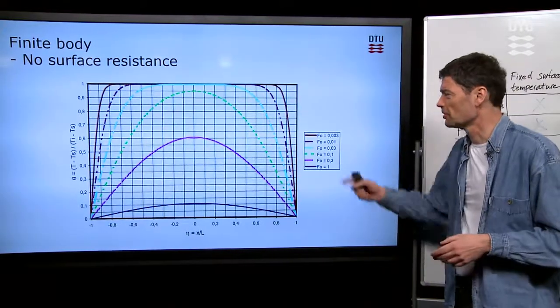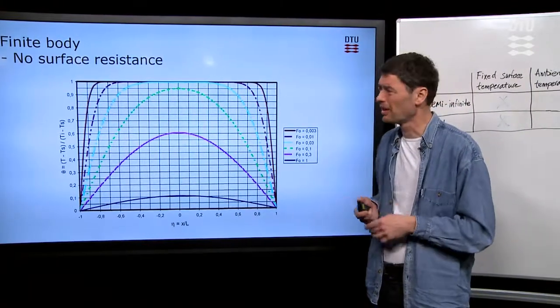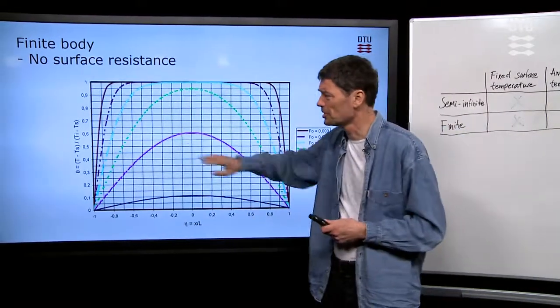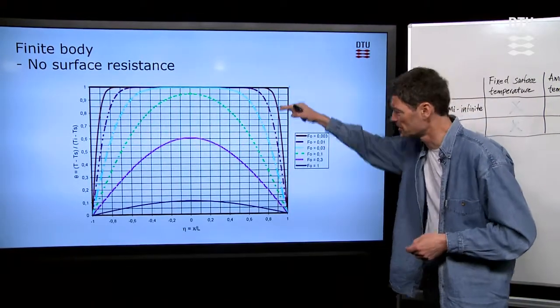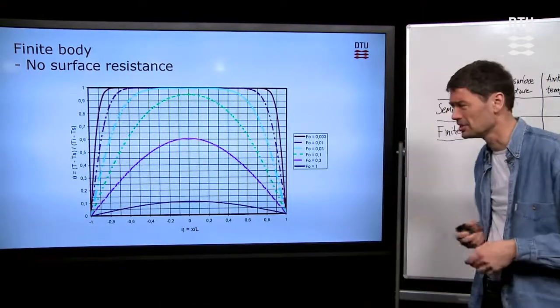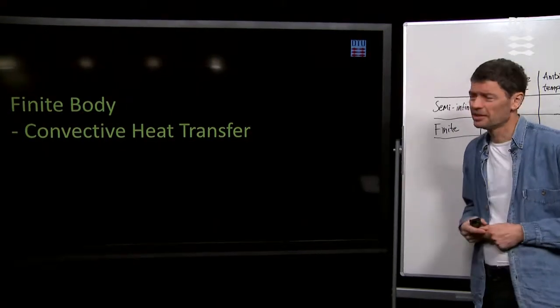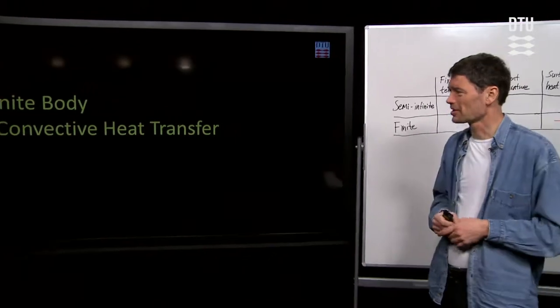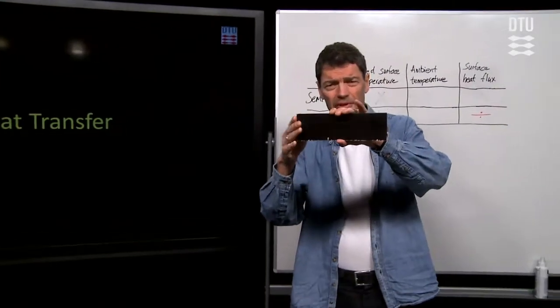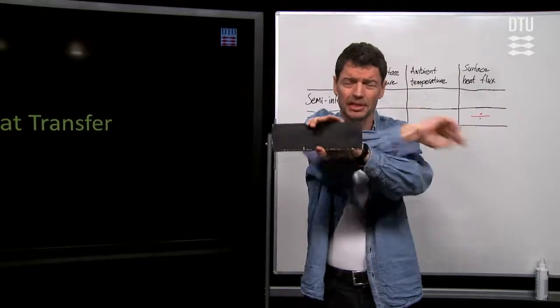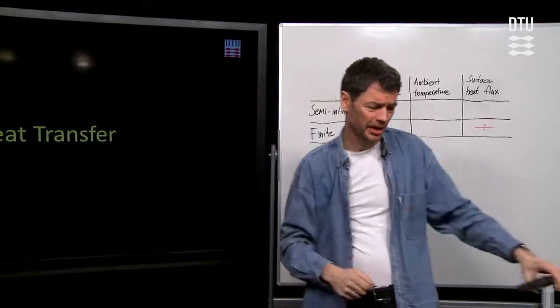Then you can also plot it or you can also read from the chart depending on the time with the Fourier number. Then you can read the values as they are for the temperature inside of our body after a change has occurred. We start up right here on the top and then at the surface it drops to zero initially. That's for this case that is plotted here. The last case I will talk about today is the case again with the finite body. But now with a convective heat transfer coefficient.